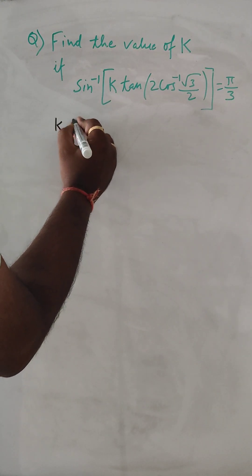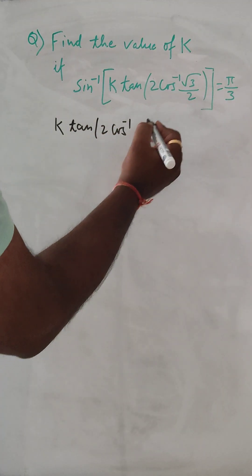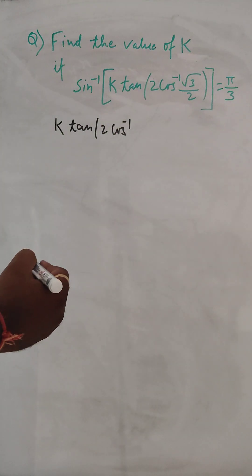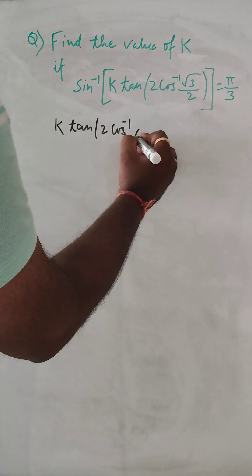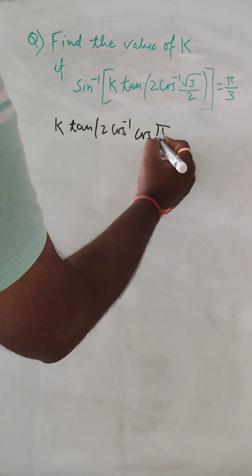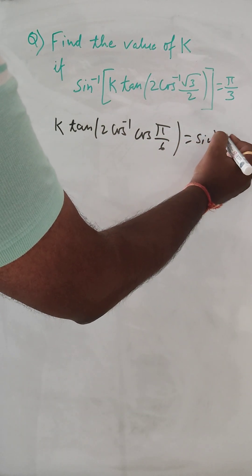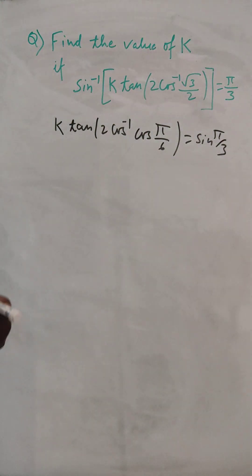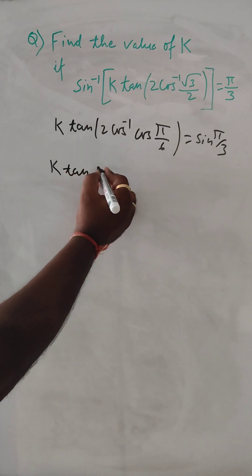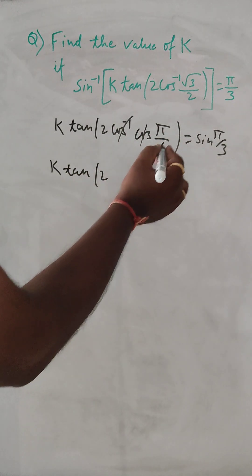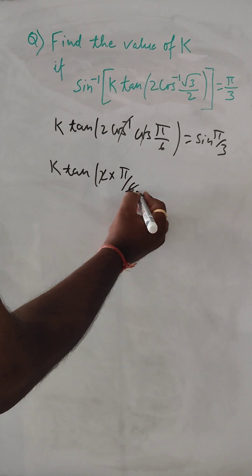So k times tan of 2 cos inverse of under root 3 by 2. Now, under root 3 by 2 is cos 30 degrees, so cos inverse of under root 3 by 2 is pi by 6. And on the right side we have sin of pi by 3. So the argument becomes 2 times pi by 6, which is pi by 3.